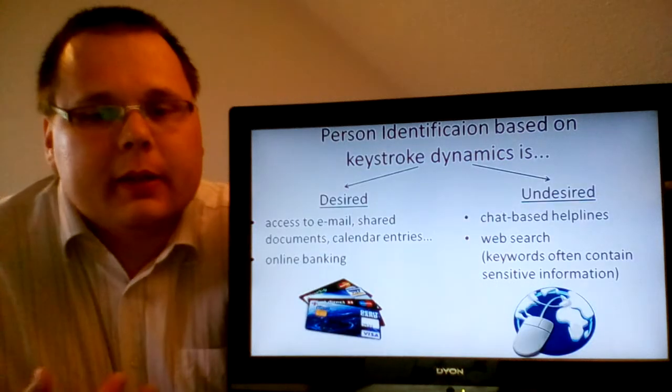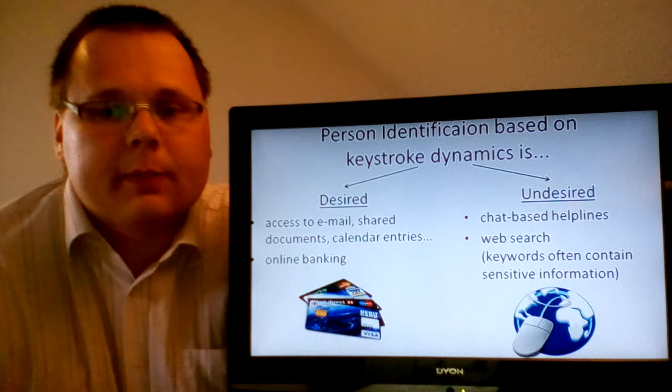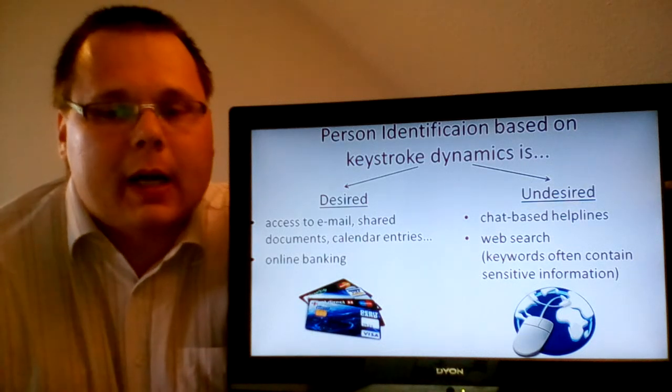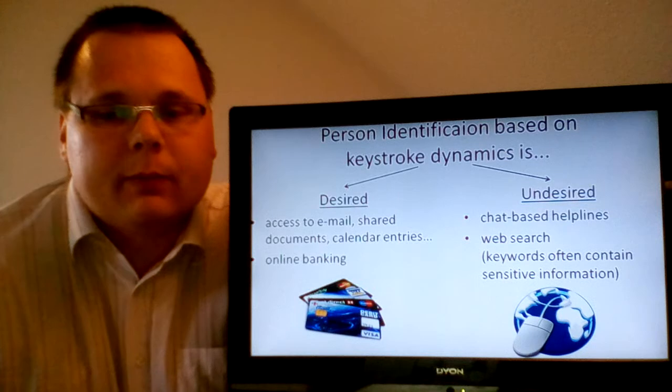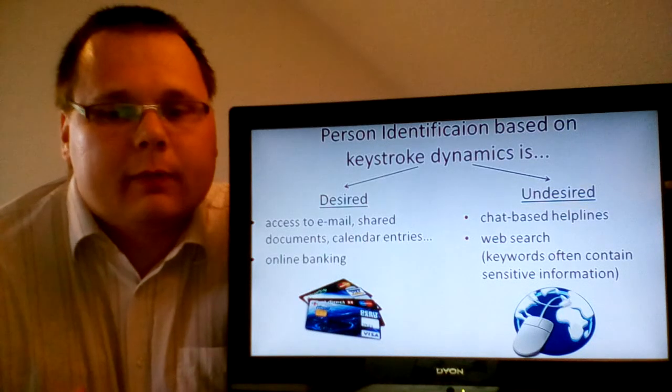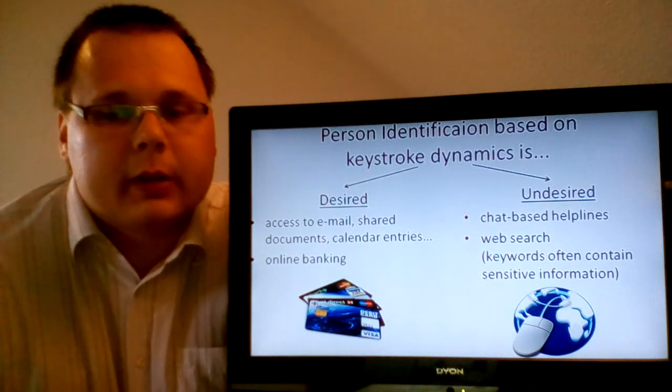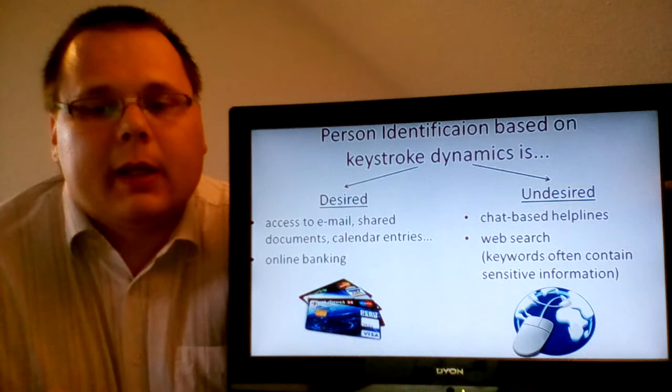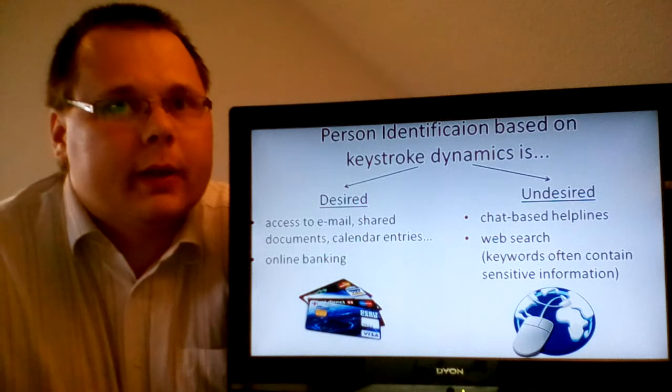However, in general, user identification based on keystroke dynamics may be desired in many cases. For example, if we pay with a bank card on the internet, currently we only need to type some pieces of information, all of which are printed on the card. And it would be really great if the system would additionally check whether, for example, the card number or the name of the owner were typed with the owner's keystroke dynamics. This could increase security. And because of such applications, in several earlier publications of us, we proposed methods for accurate person identification.